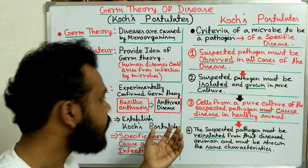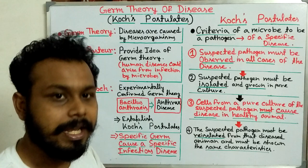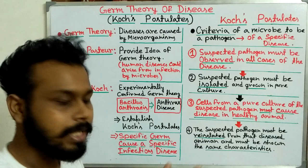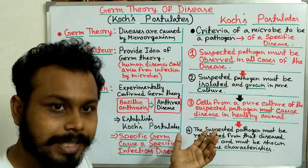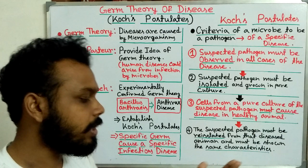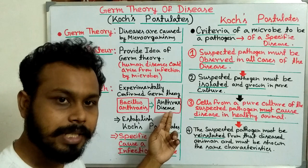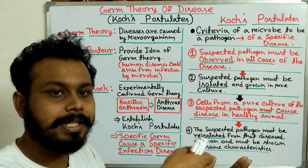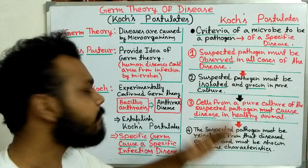First, he isolated the Bacillus anthracis microorganism from an anthrax-diseased animal. He collected Bacillus anthracis from that diseased animal and grew it in pure culture. After growing in pure culture, he injected those cells of the pure culture into a healthy animal. He then observed that those healthy animals showed the same symptoms of anthrax disease.